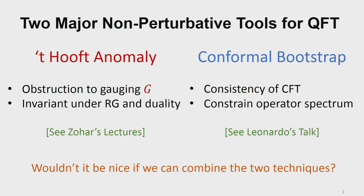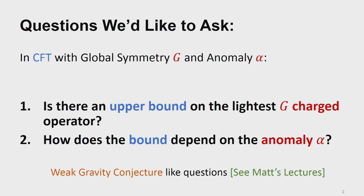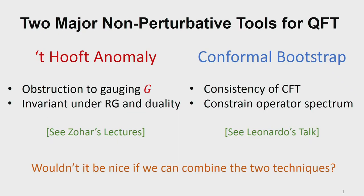The first tool is the program of conformal bootstrap — to exploit the consistency of CFT data to constrain the local operator spectrum, sometimes even about operators living on the defect. The other program is to study symmetry and anomaly. The 't Hooft anomaly is an obstruction to gauging a global symmetry G, and the anomaly is subject to matching — it has to be the same when you check duality and when you flow from UV to IR.